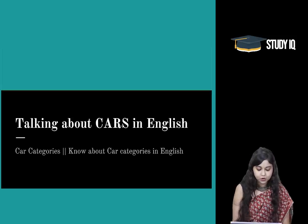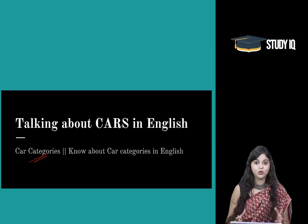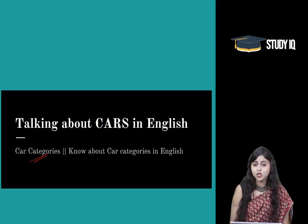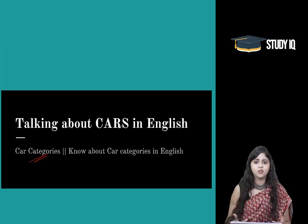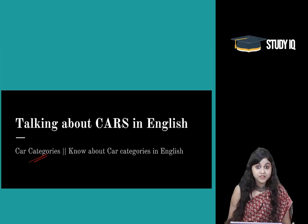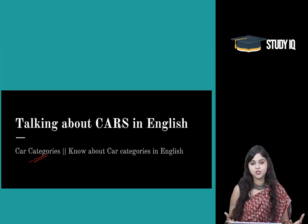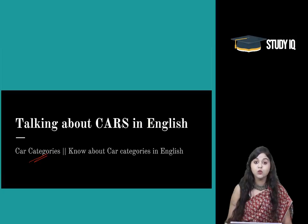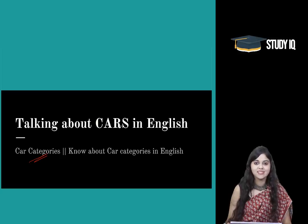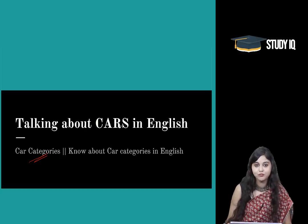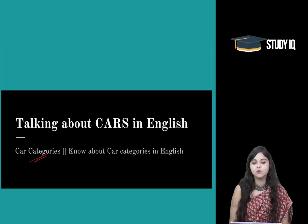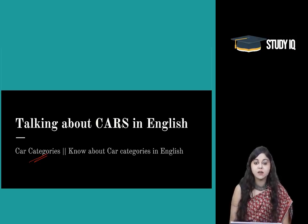So here we have seen some important car categories. You can make sure that next time you mention one of these categories — most of the time we either aspire to purchase a car or we see cars around us that we want to describe. So we can keep these car categories in mind while talking about cars with others. You can mention in the comment section the car you would want to own in the future. In case of any doubts, you can also mention those in the comment section. You can also reach out on Instagram.